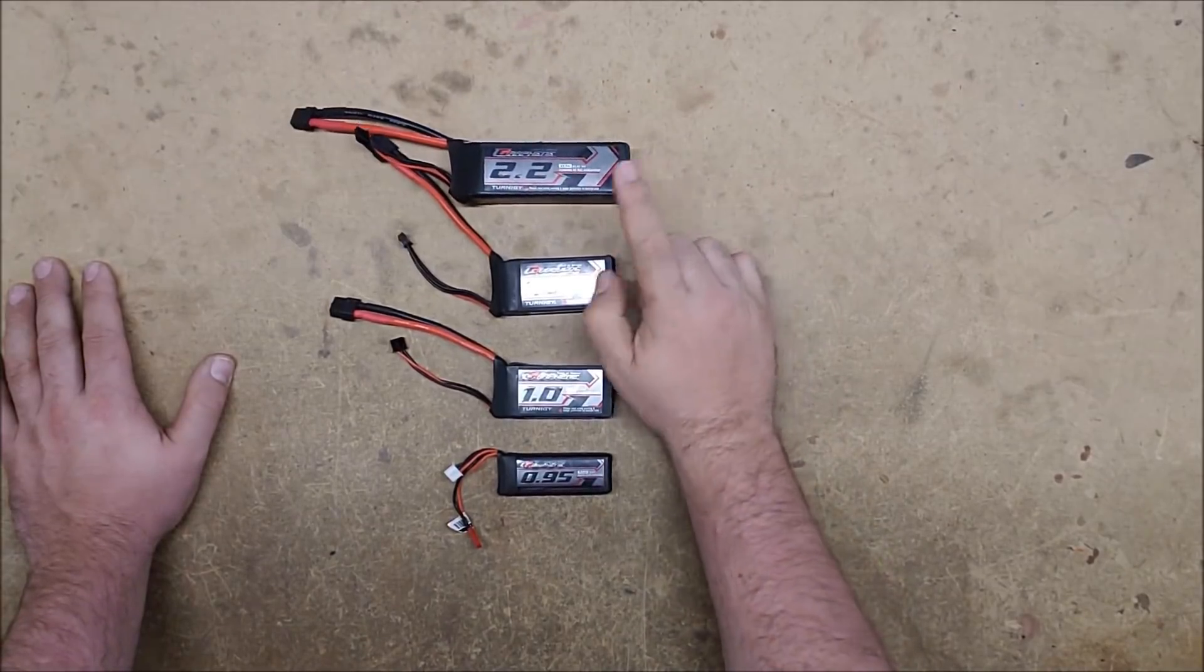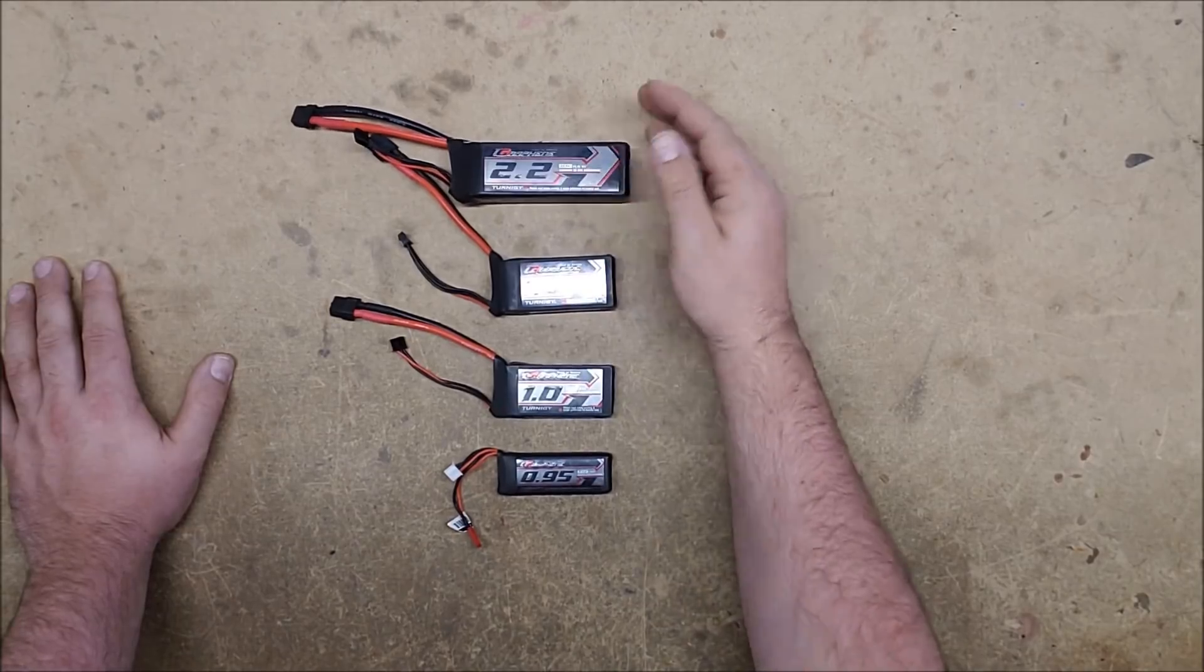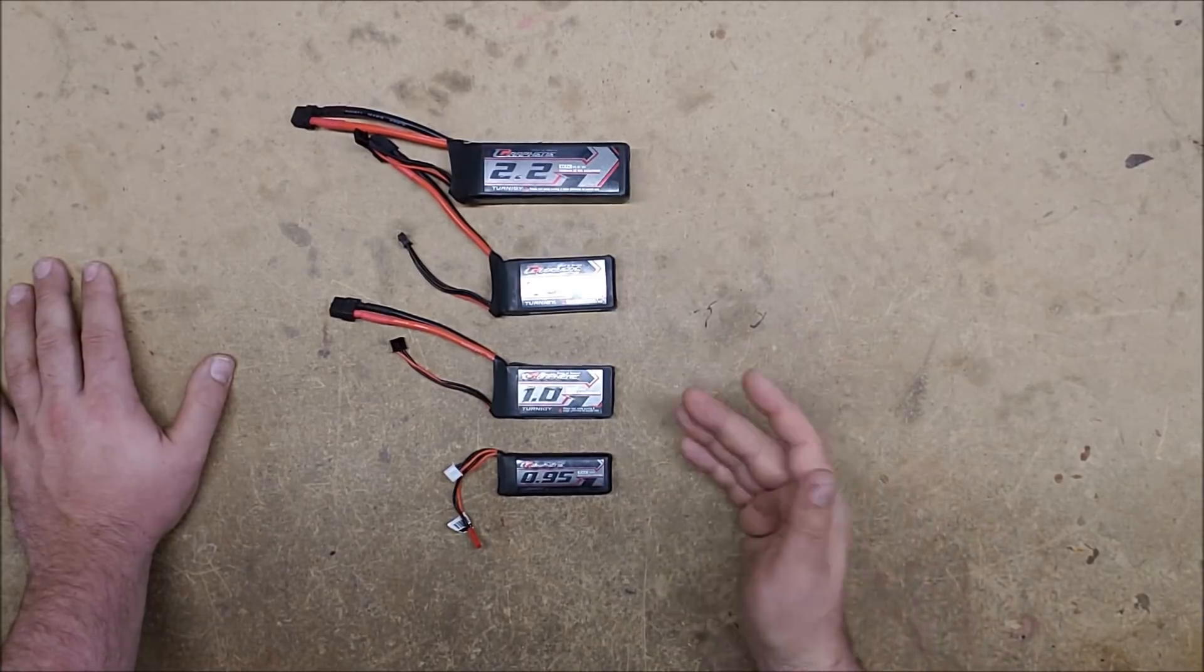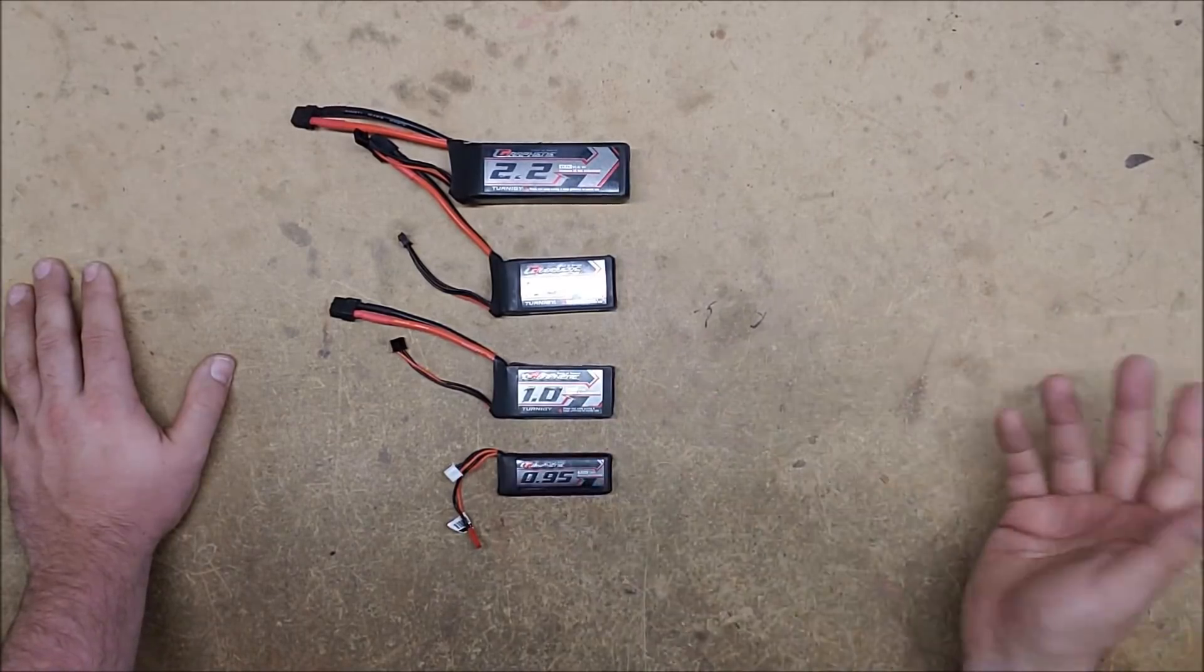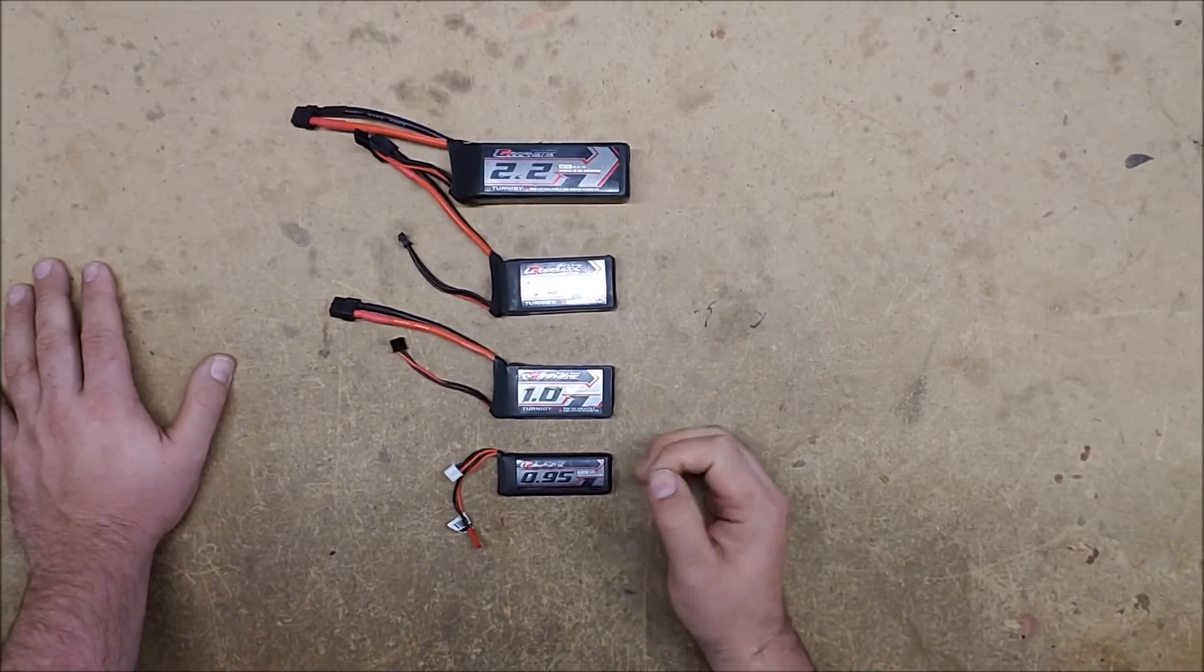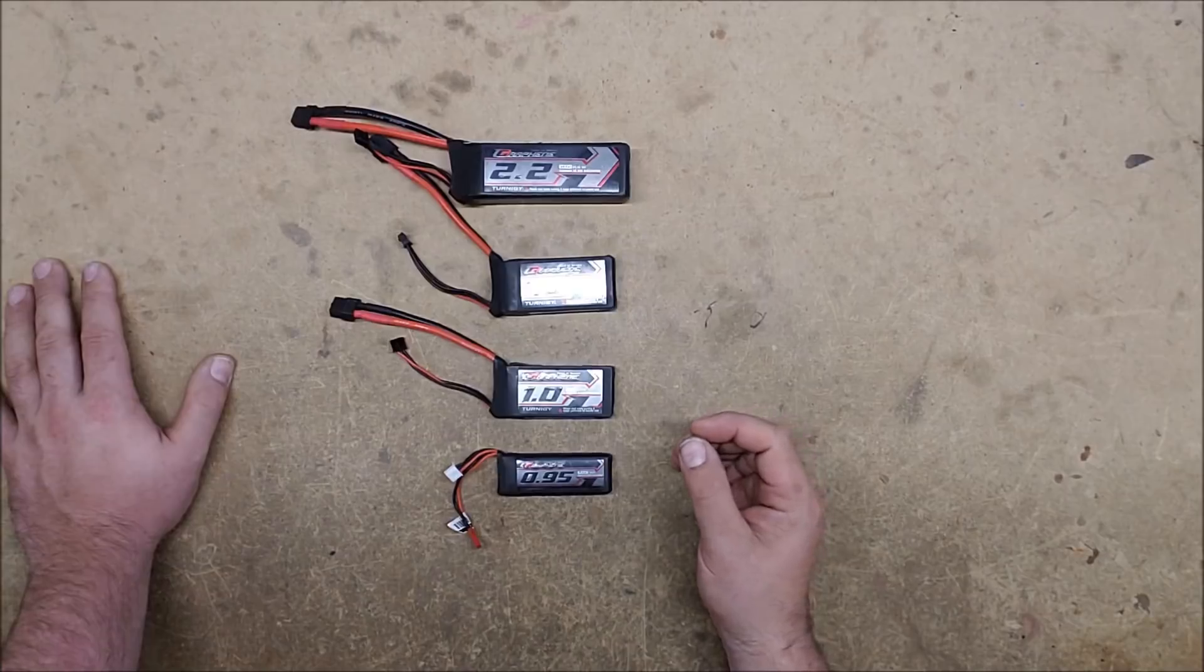The next and final number is the C rating. And this is the discharge rate that the battery has. All of these are 65. But they come in multiple different options. You can get them in 20, 40, whatever, pretty much whatever you want. You can probably find a battery in that C rating. And for our applications, the higher the C rating, the better. You can't actually have too much.